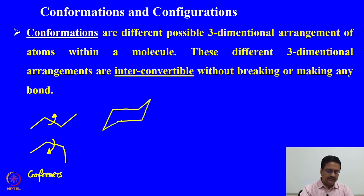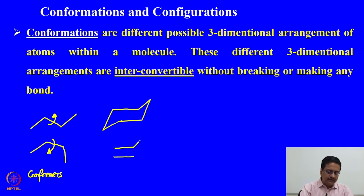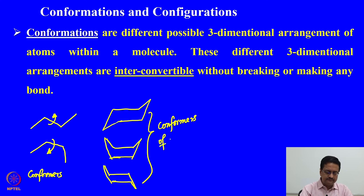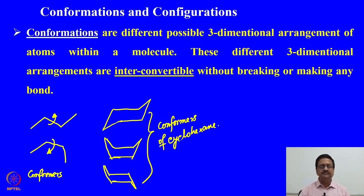These conformers are related by an angle twist, which will be part of our discussion in the next few lectures. For example, one can draw cyclohexane in multiple different ways — these are different conformers of cyclohexane. These different forms can be interchanged by bending or twisting the molecule, and these conformers are temperature dependent. At lower temperature, the conformation with lower energy is more stable; at higher temperature, we start seeing different conformations.